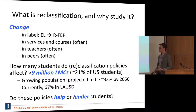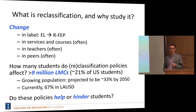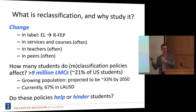We have this policy that entails a whole bundle of change for students and affects a large and growing population. This line of work is focused on the question: do these policies help or hinder students? And what could we do to evaluate these policies and improve them, so they're helping students have an easier flow from one setting to the next?